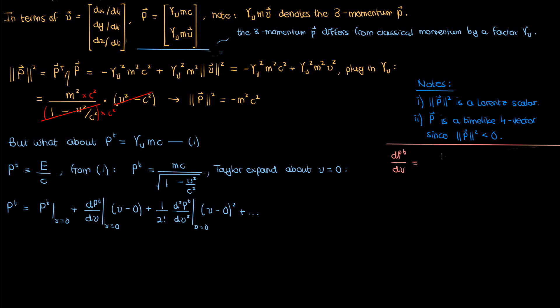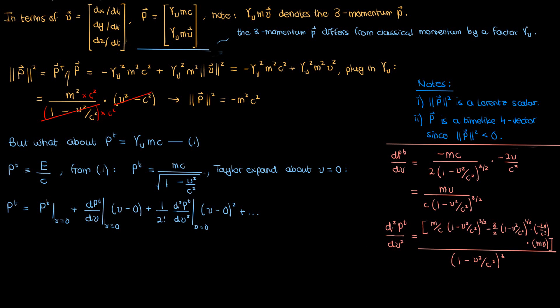The first derivative of p^t with respect to v can be found by applying the chain rule to the equation for p^t. When we do that and perform some simplifications, we get mv/c times (1 - v²/c²) to the power 3/2. Let's now take the second derivative of p^t. This time we'll have to apply a combination of the chain rule and the quotient rule. So we take the derivative of the numerator, which is just m, times our denominator, minus the derivative of the denominator, which is this monstrosity, times the numerator, and then we divide all of that by the square of the denominator. When evaluated at v equals 0, the first derivative is just 0, while the second derivative at v equals 0 is just m/c.